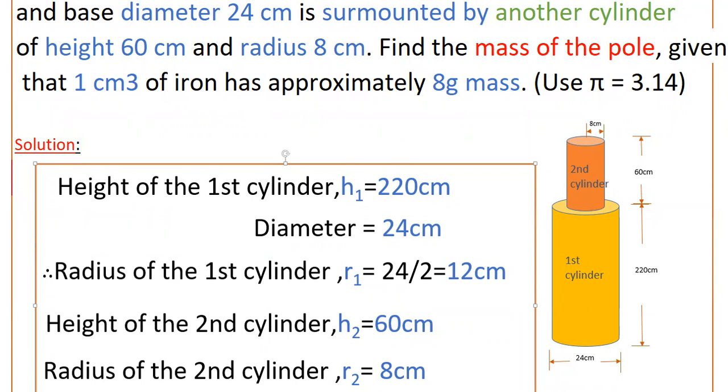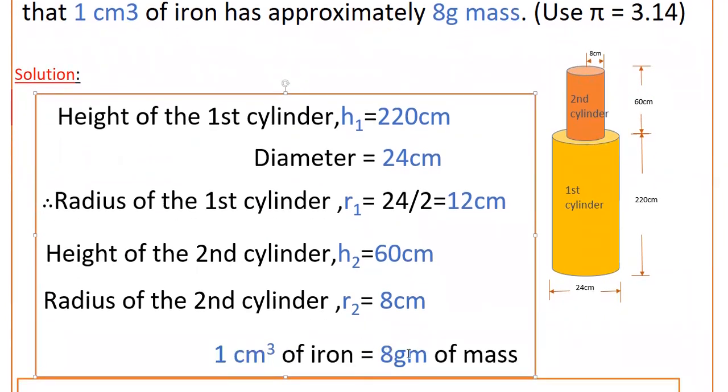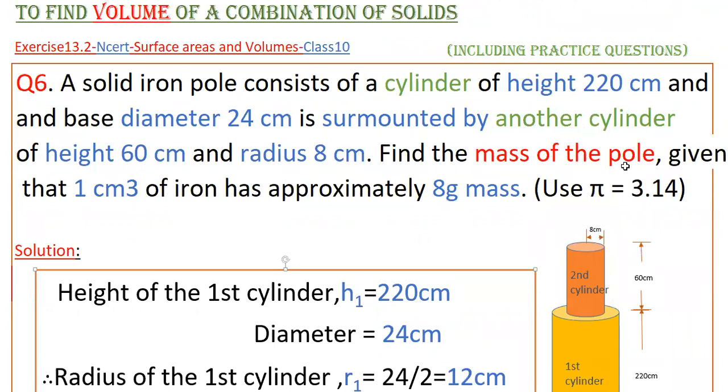Also given: 1 cm³ of iron equals 8 grams of mass. Here we have to find the mass of the pole.